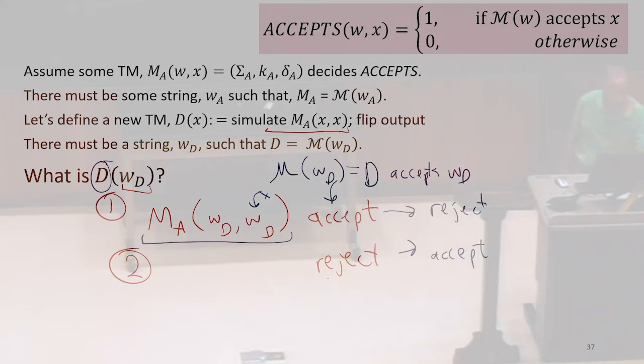Well, the same thing here. If this rejects, it means D rejects. But because we're flipping the output here, the machine has to accept. So we have a contradiction. Neither of these can be the case.